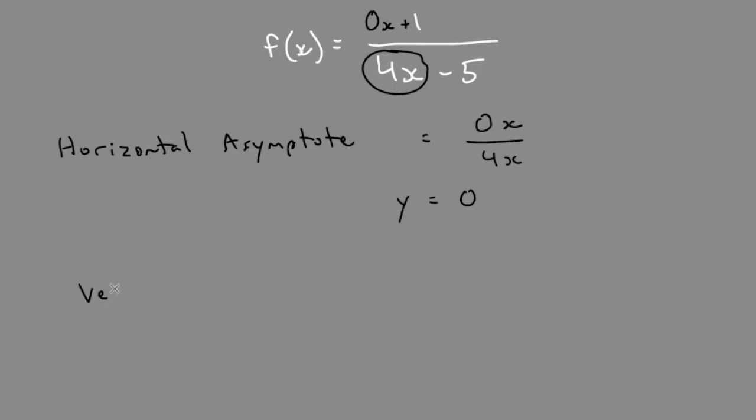To find the vertical asymptote, we set the denominator of the function equal to 0 and solve for x.